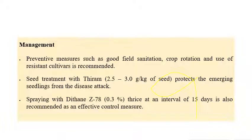For management of downy mildew, field sanitation is very important along with crop rotation. Resistant cultivars should be used. Seed treatment with Thiram at 2.5 to 3 grams per kilogram of seed is recommended to protect against seedling diseases including downy mildew. Spraying of Dithane Z-78 at 0.3% concentration, three times at 15-day intervals, is recommended for effective control.